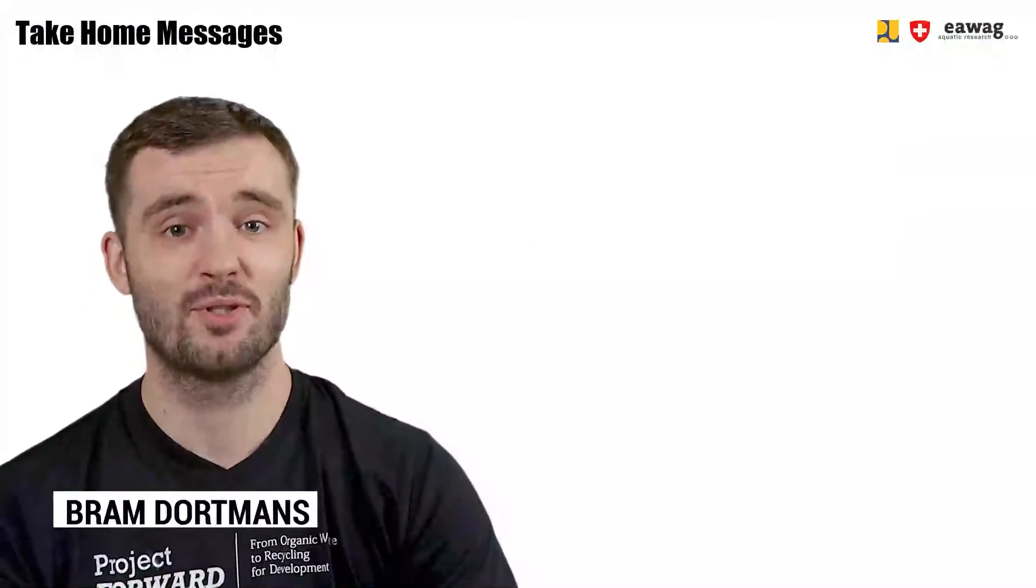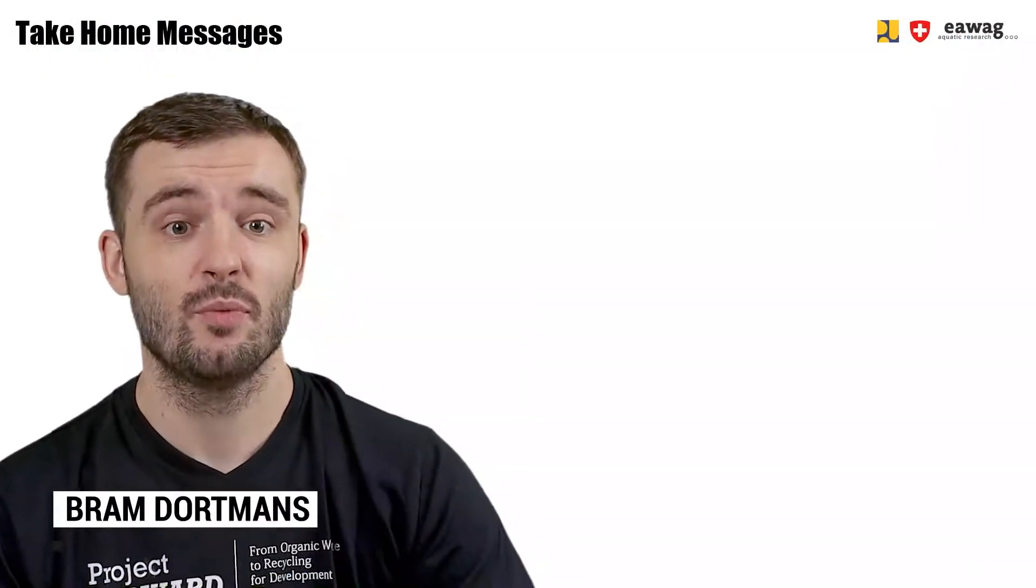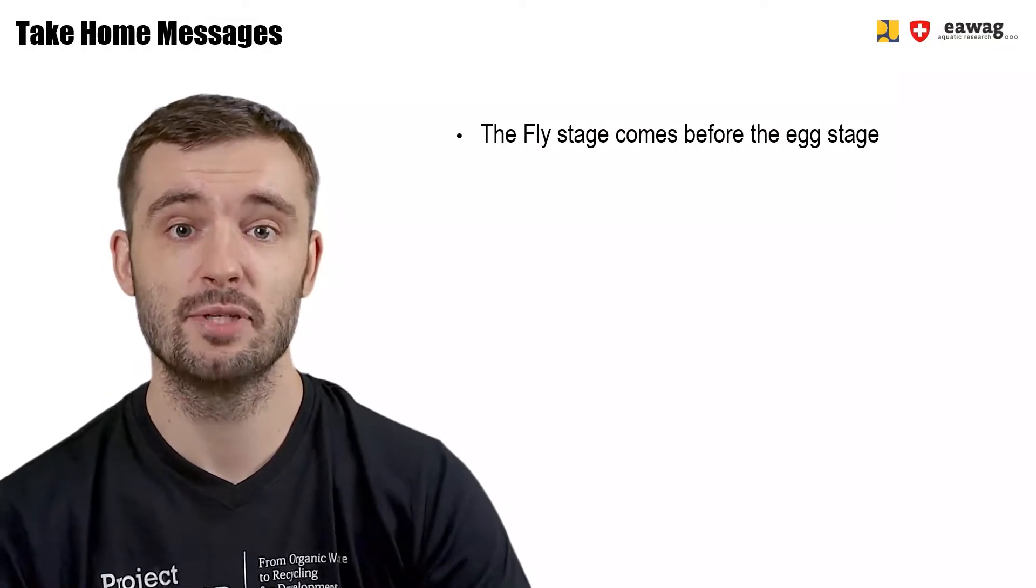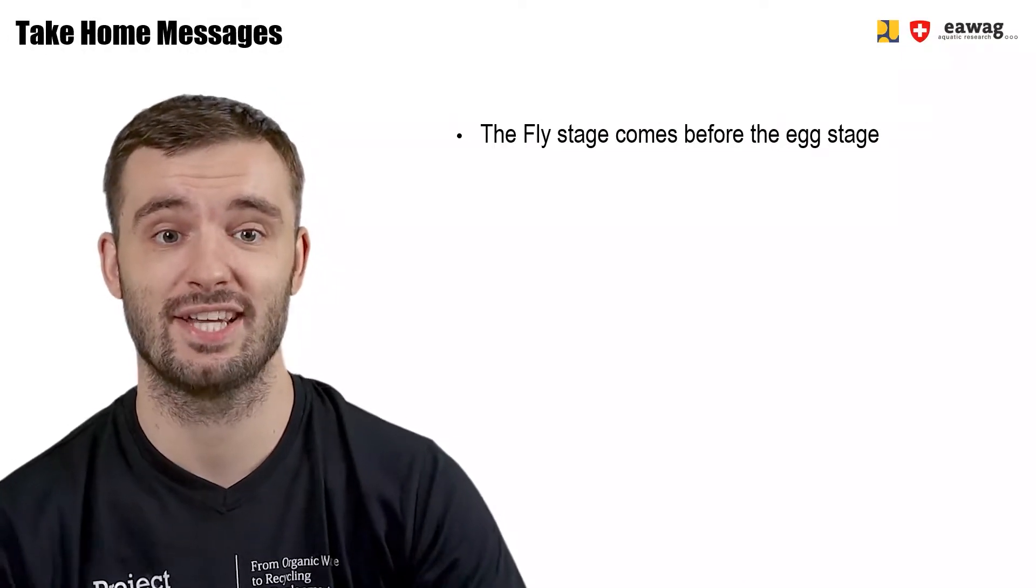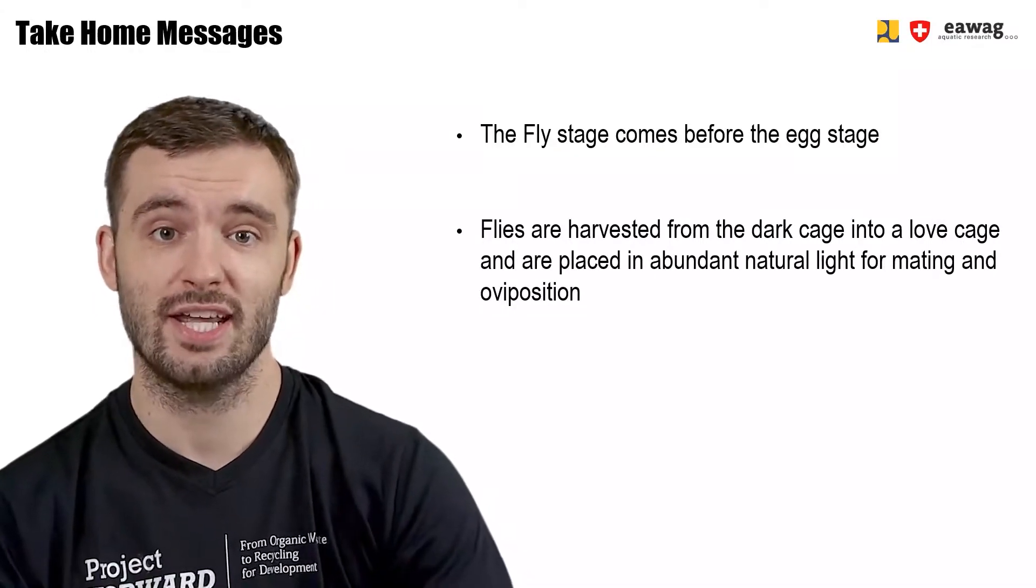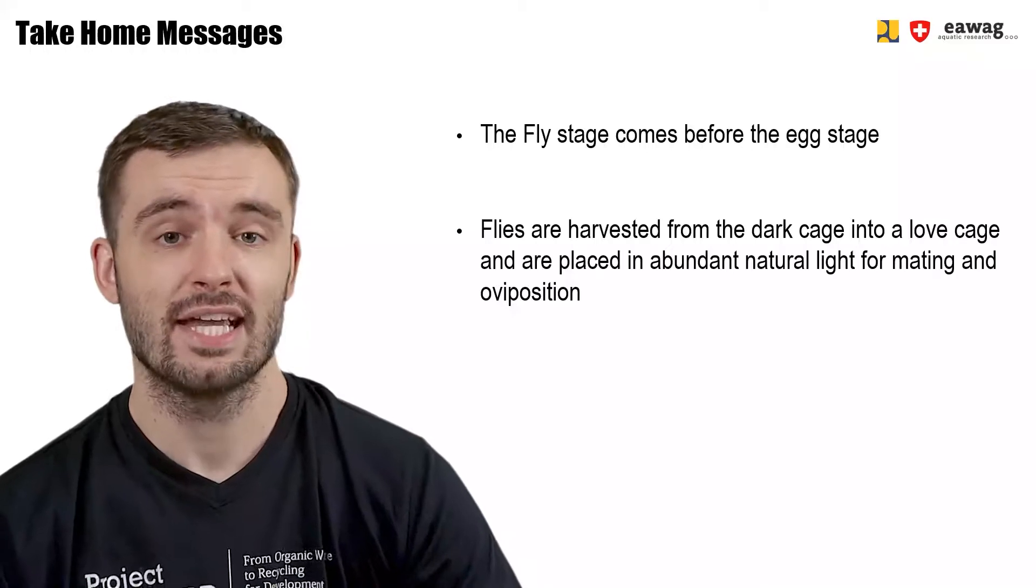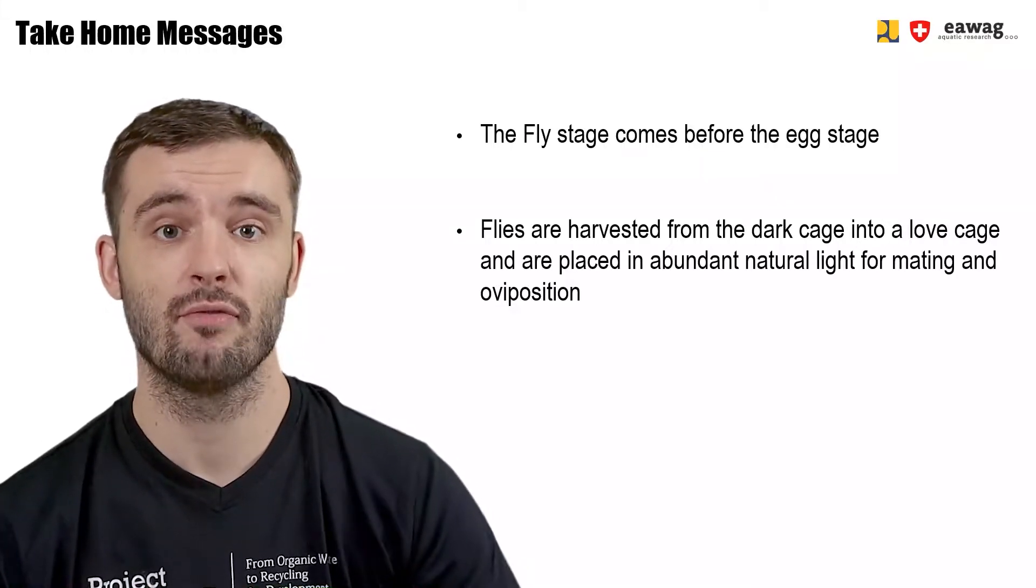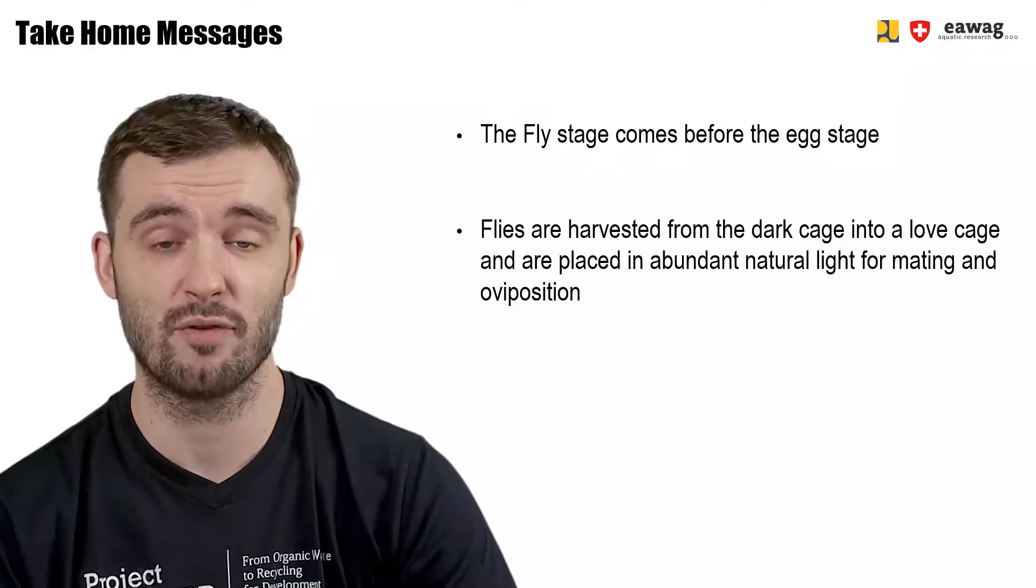We have come to the end of this module on the fly stage. We saw that in the BSF life cycle the fly stage comes between the pre-pupae stage and the egg stage. We saw that flies are harvested from a dark cage into a loft cage and that this loft cage is then placed outside where abundant natural light can allow for mating and egg deposition.